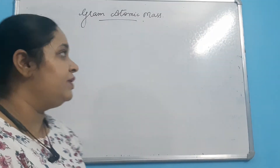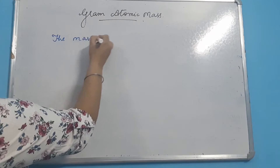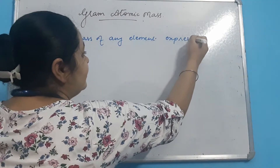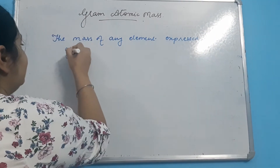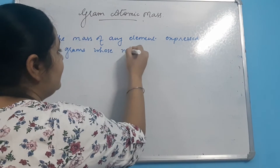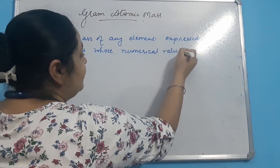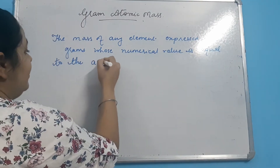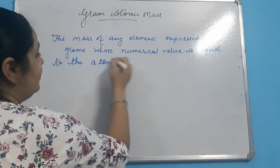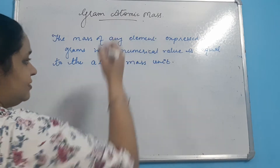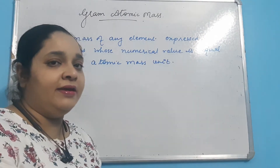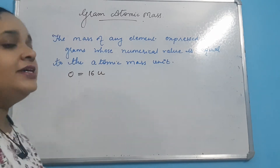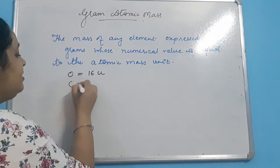So what is gram atomic mass, students? The mass of any element expressed in grams whose numerical value is equal to the atomic mass in unified mass units. For example, we have seen that oxygen's unified mass is 16U and carbon is 12U.